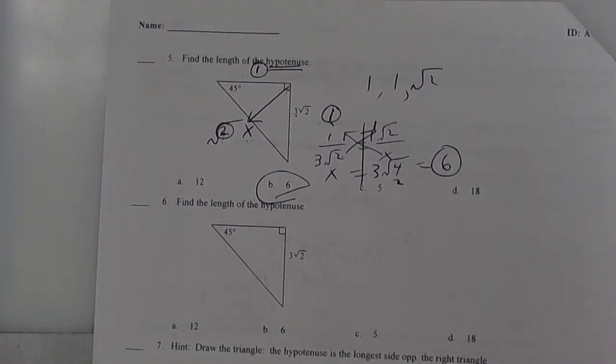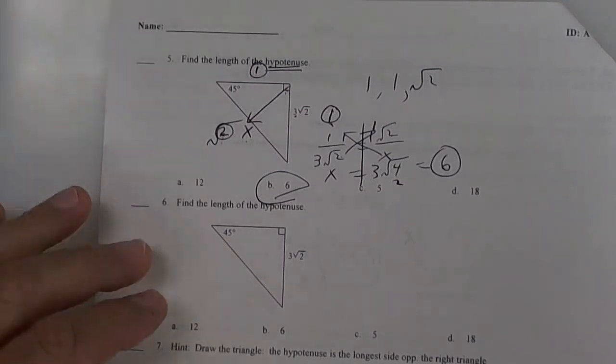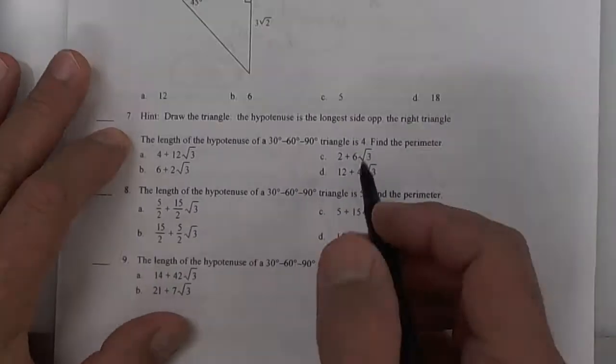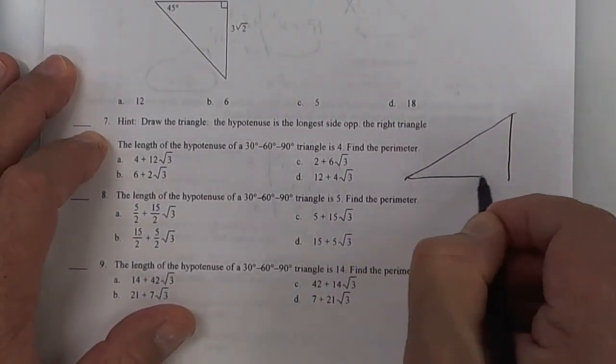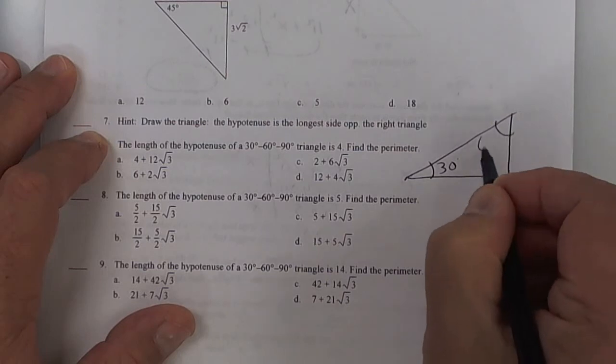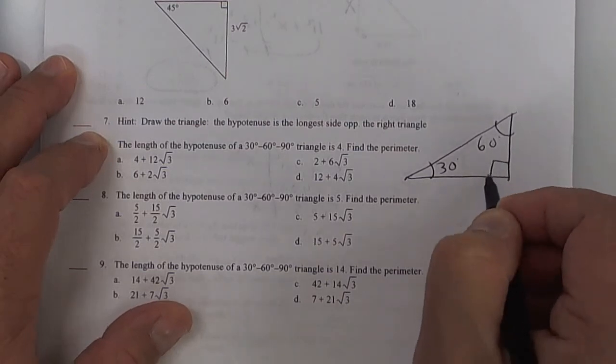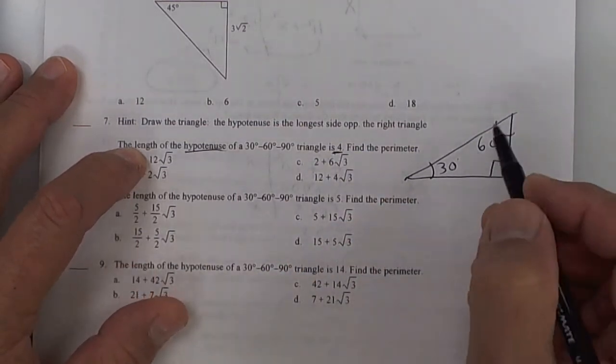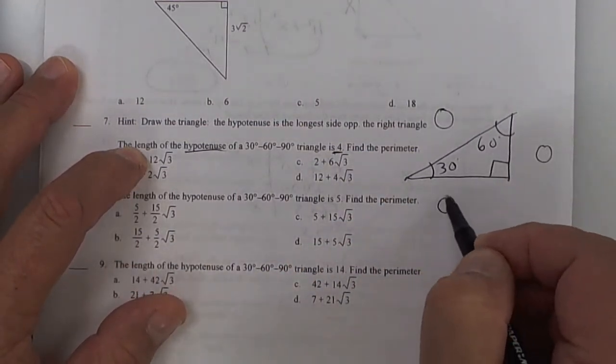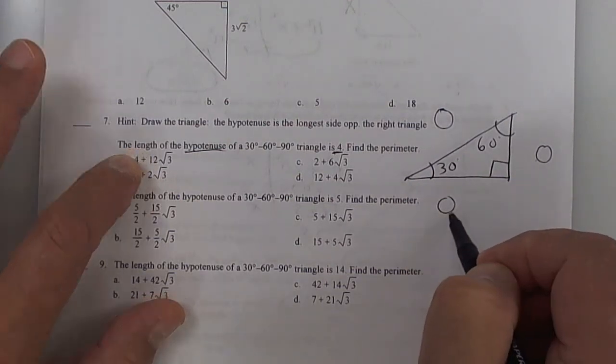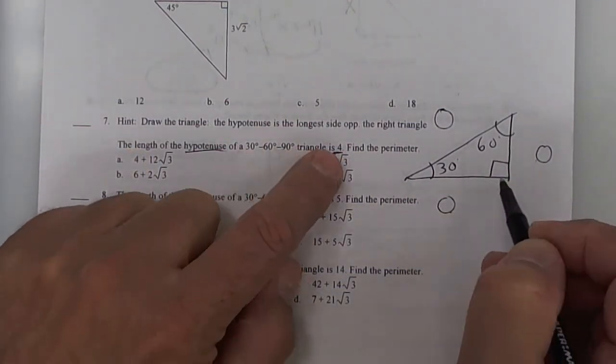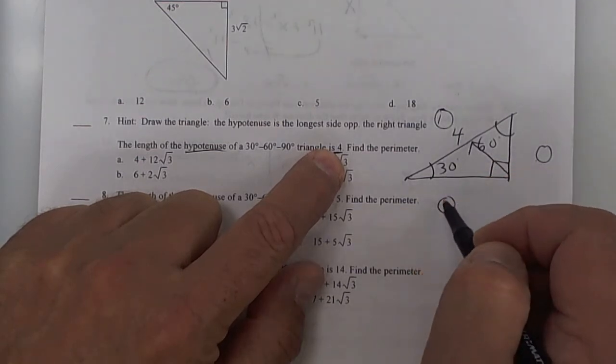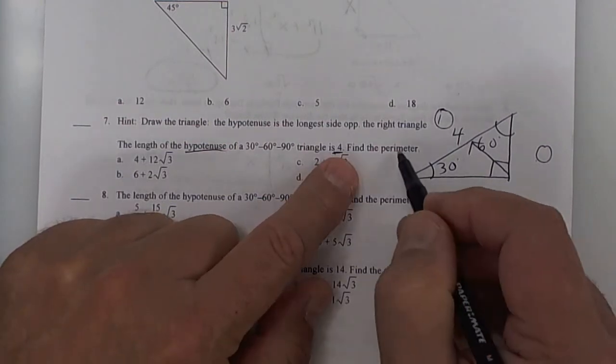All right, the next one is a 30, 60, 90. I'm going to skip this one, because it's the same deal. In fact, it's the same problem. All right, look at number 7. Draw a 30, 60, 90 triangle. Now, look here. It says the hypotenuse is 4. So do I put the 4 at the top, the right, or the bottom? Make sure you know that the hypotenuse is opposite the right angle. So this is your 4 right here.